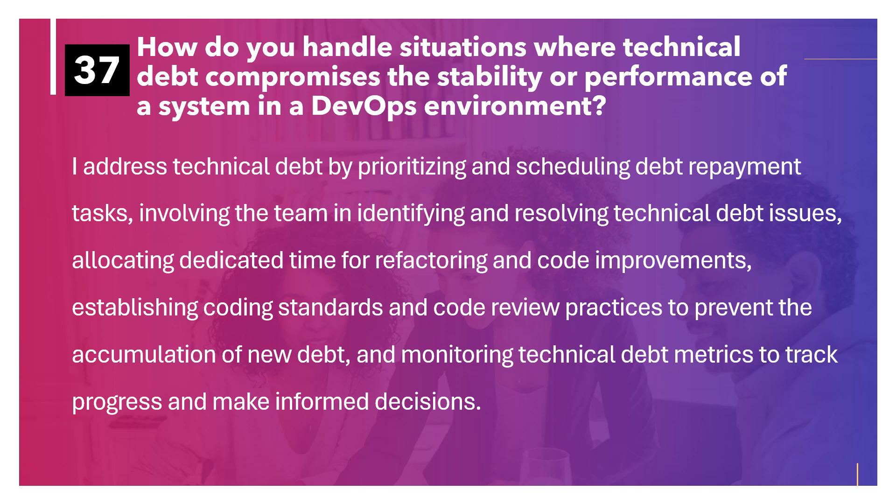How do you handle situations where technical debt compromises the stability or performance of a system in a DevOps environment? I address technical debt by prioritizing and scheduling debt repayment tasks, involving the team in identifying and resolving technical debt issues, allocating dedicated time for refactoring and code improvements, establishing code standards and review practices to prevent new debt accumulation, and monitoring technical debt metrics to track progress and make informed decisions.